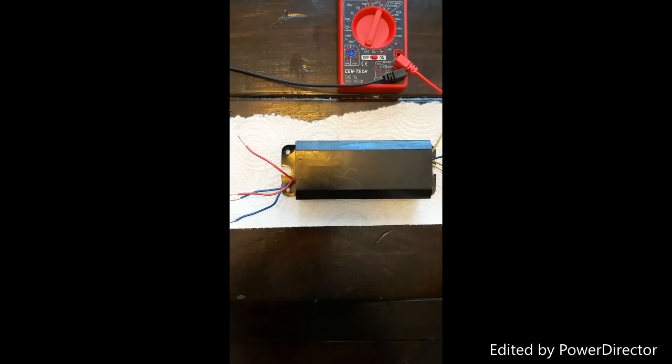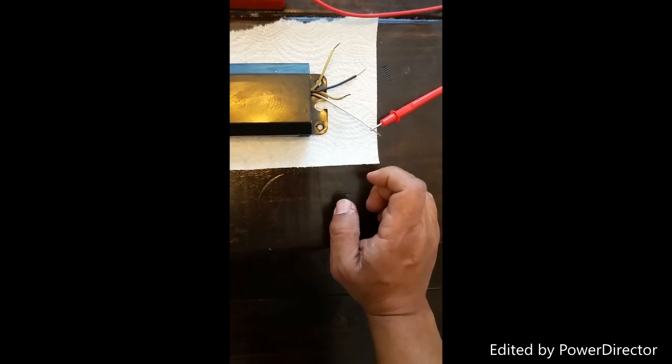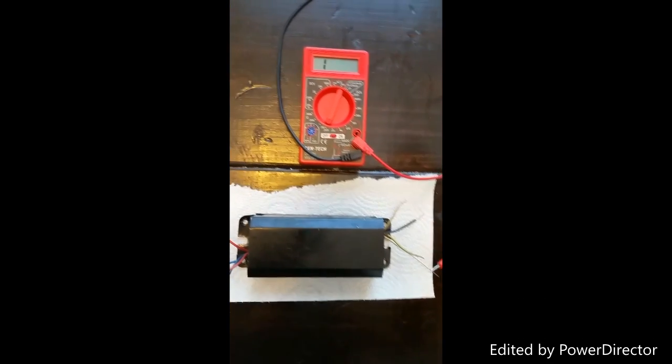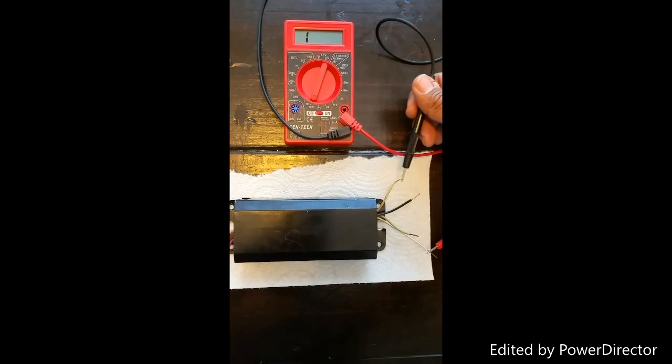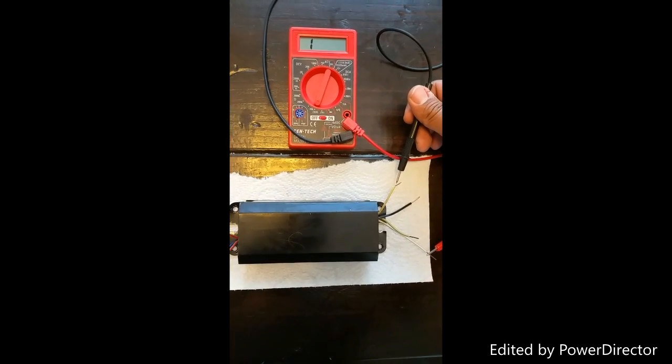You want to set one of your leads on the white wire - that's the power coming into the ballast - and then you take your other lead. Now if you see the gauge, you'll see what I'm talking about. I'm going to touch the yellow wire.